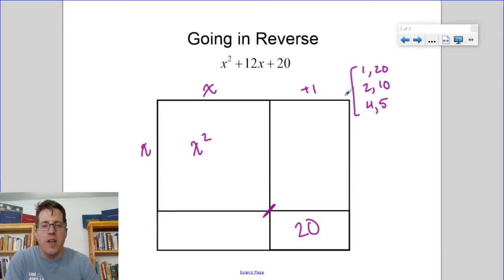Make sure when you find the wrong answer, you cross it off so you don't accidentally write it again. So then let's try plus 2 and plus 10. That would make plus 10x and plus 2x. Oh, those do add to the 12 that I'm looking for.